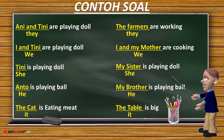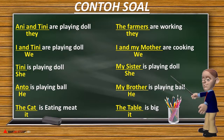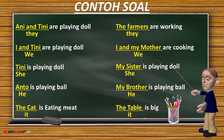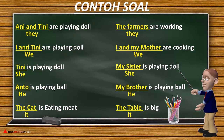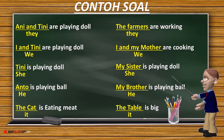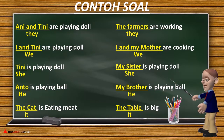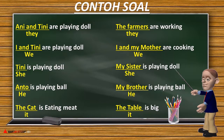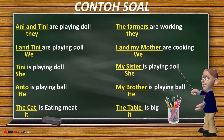Contoh soal: Mari kita perhatikan contoh soal pertama, yaitu kata ganti They. 'Annie and Tina are playing doll.' Annie dan Tina memiliki kata ganti They karena mereka lebih dari satu nama. Lalu, pada contoh kedua: 'The farmers are working.' Farmer bermakna petani, tapi dikarenakan ada huruf S setelah kata farmer, maka petani ini lebih dari satu orang. Maka kata gantinya adalah They.